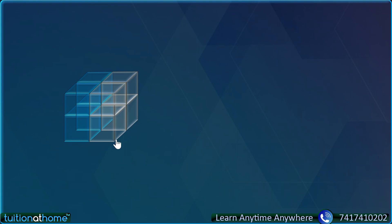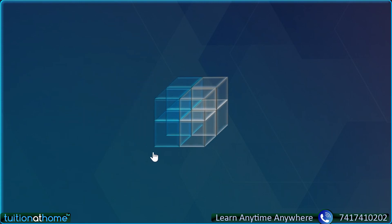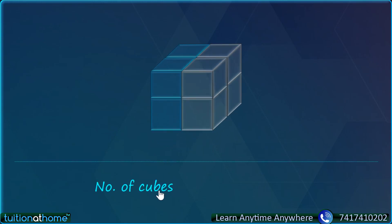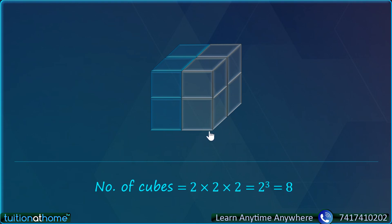This is 1 plus 1 = 2, 1 plus 1 = 2, 1 plus 1 = 2. And how many cubes are here students? 1, 2, 3, 4 — 4 plus 4 = 8. And we can write this number 8 as 2 into 2 into 2, which is 2 cube and that is equal to 8.